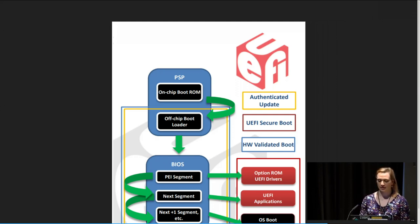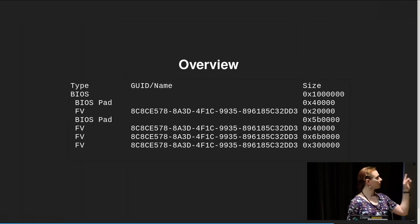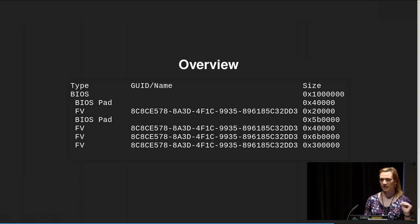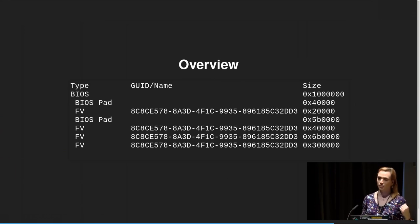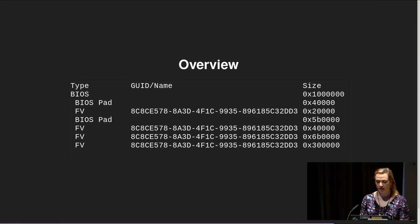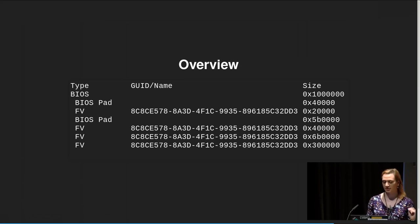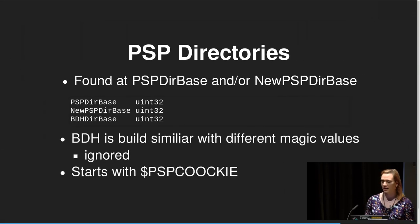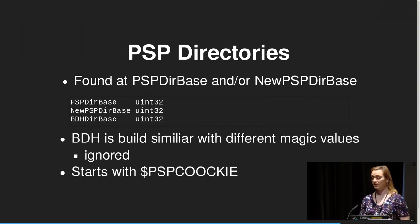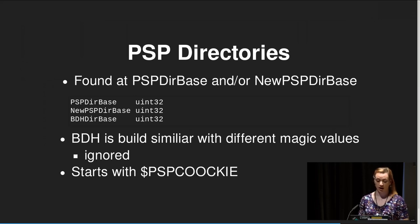Where does this PSP firmware lie in the UEFI image? It's usually starting in the second padding, because AMD doesn't distribute it as UEFI volumes — it's just binary with offsets. If you want to play around with your AMD firmware image, don't touch the padding or it will no longer boot. In the firmware entry table there are the PSP base addresses. There are three entries: the PSP directory base, the new PSP directory base, and the BDH directory. The BDH directory is very similar to the PSP but with different magic values.